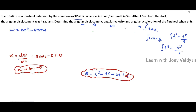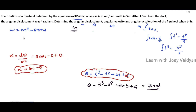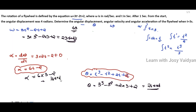The question asks for alpha, theta, and omega when t equals 3 seconds. First, theta: substituting t equals 3 into the theta equation gives 3 cubed minus 3 squared plus 2 times 3 plus 2, which equals 26 radians. Next, omega: substituting t equals 3 gives 3 times 9 minus 2 times 3 plus 2, which equals 23 radians per second. Finally, angular acceleration alpha equals 6 times 3 minus 2, which equals 16 radians per second squared.